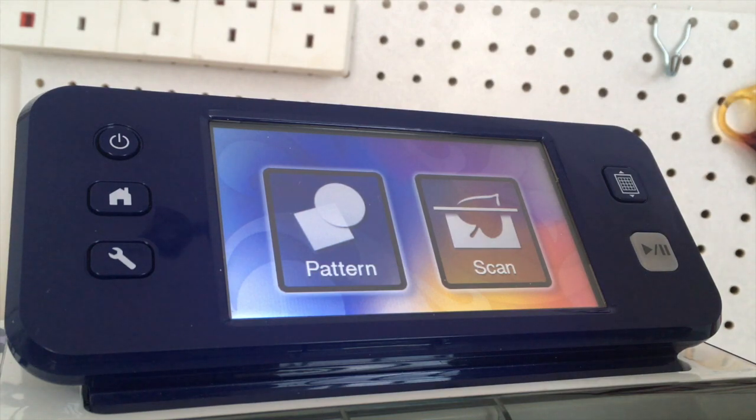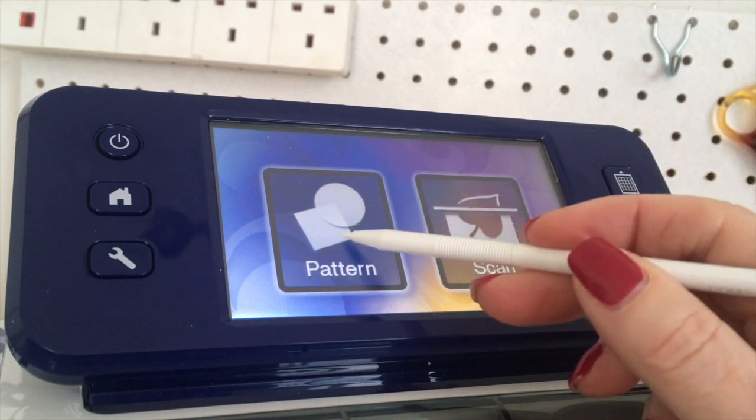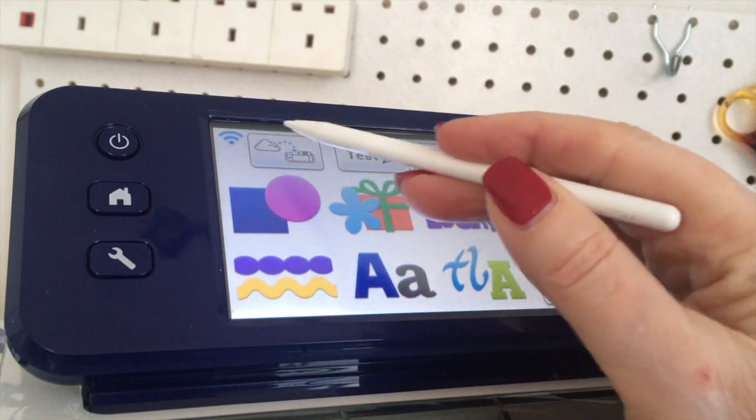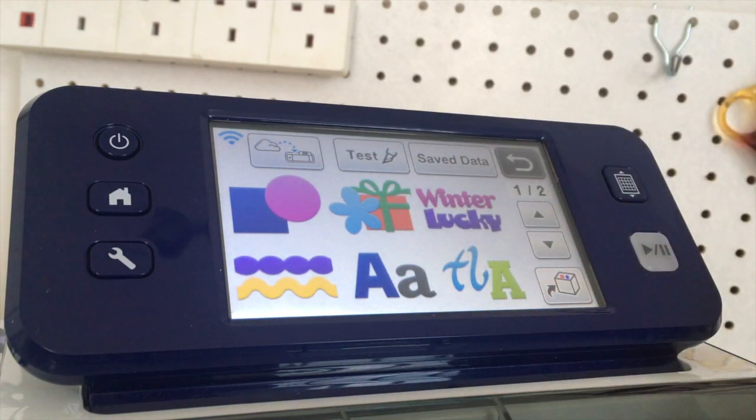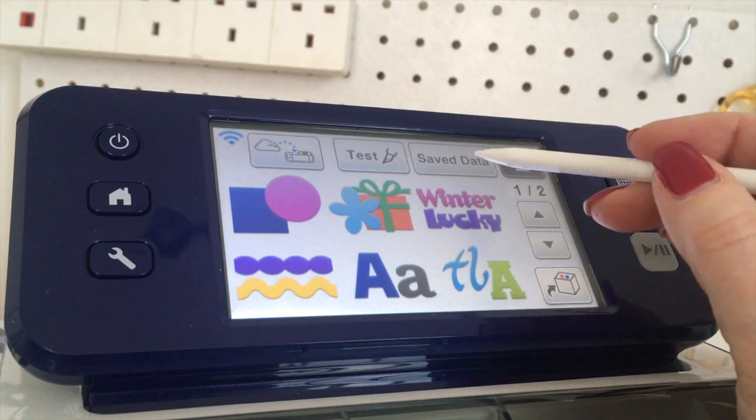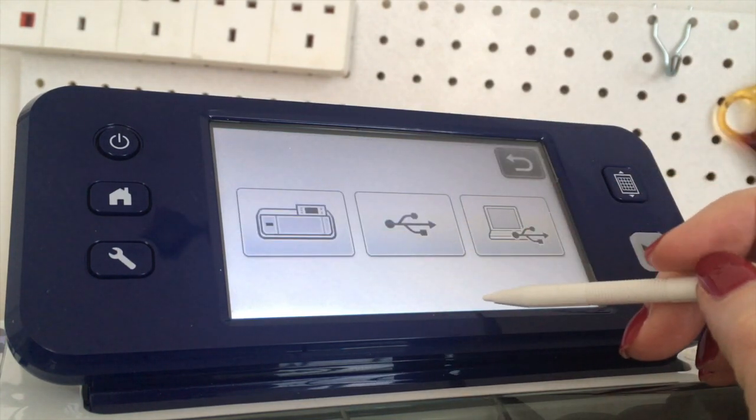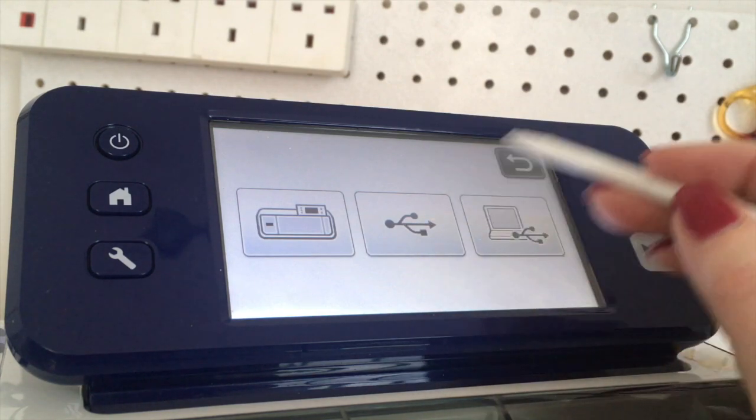Okay, so I've got the machine switched on. I'm going to go to pattern. I'm going to come up to here to the wi-fi transfer. If you've brought yours over on USB, plug your USB into the side of your machine and then you would go to save data and go to your USB stick.